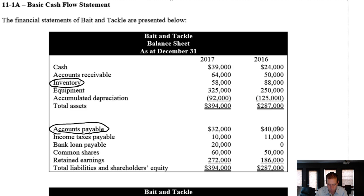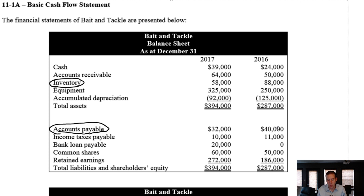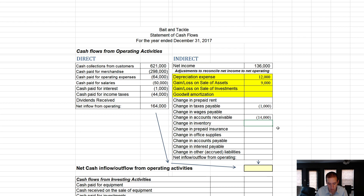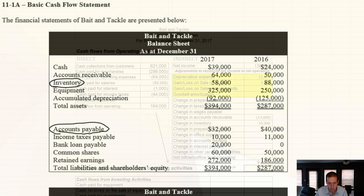Inventory went down by $30,000 — this is very good for cash. Think of the counter example: if inventory goes up by $30,000, it means we're spending more money on inventory, more cash tied up. Inventory decreasing means less cash is tied up in inventory and more cash in our pocket. All else equal, you'd rather run a company with less inventory because less of your money is tied up. So this is $30,000 to the good.